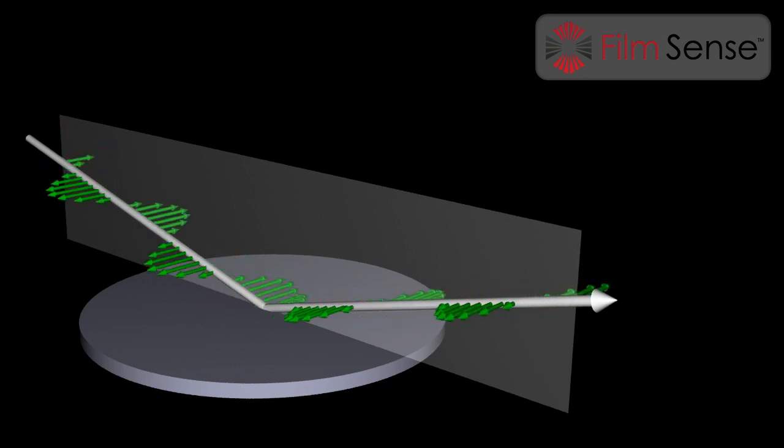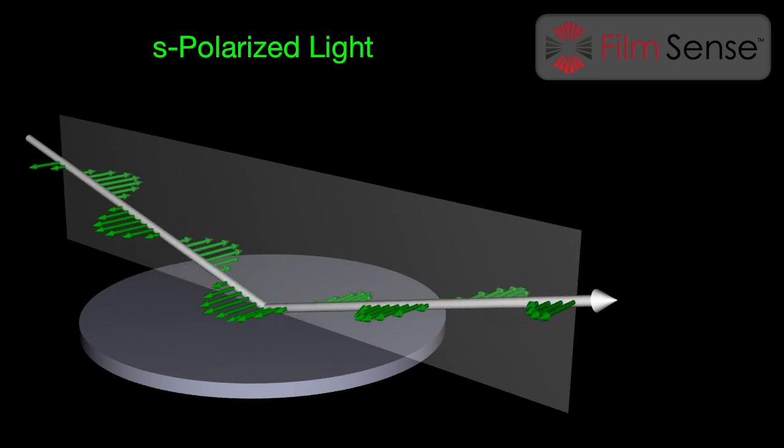Light, with its electric field vector oscillating perpendicular to the plane of incidence, is called s-polarized light.